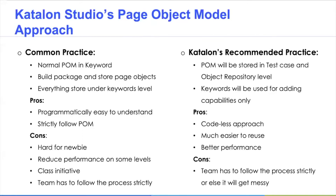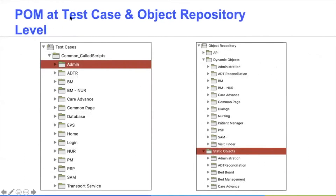Let me elaborate on what this looks like when you apply the Page Object Model using Katalon Studio. Inside the test cases, all the common test scripts are stored by page — that's really the Page Object Model. All the common test cases, like login or some action on a specific page, are stored inside the test cases level. When you want to reuse it, all you need to do is drag and drop it — I'm going to show you that in the demo later.